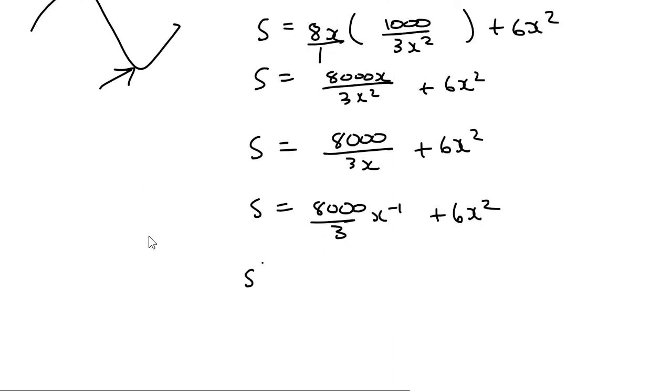Now we can take the first derivative. And that's going to give us minus 8,000 over 3 because I'm multiplying the minus 1 to the front, x and then I minus 1, so it's minus 2 plus 12x.